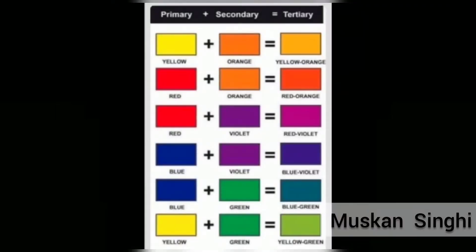Now let's see how we get tertiary colors by adding primary and secondary colors. Yellow plus orange gives yellow-orange. Red plus orange gives red-orange. Red plus violet gives red-violet. Blue plus violet gives blue-violet. Blue plus green gives blue-green. And yellow plus green gives yellow-green.